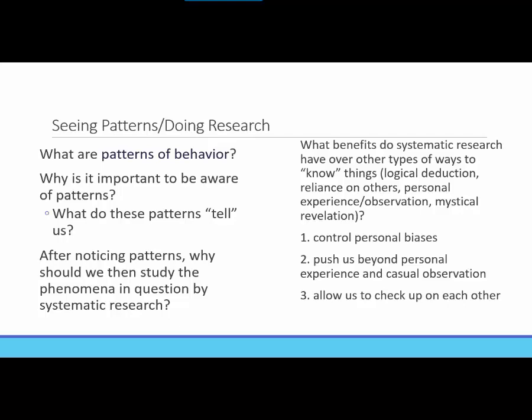But this idea that we know something based on our observations and personal experience does not necessarily meet the gold-star standard of engaging in systematic research. Research methodology is really what sets sociology up as a specific social science and discipline — not just the armchair philosophizing and theorizing that Comte suggested the everyday person on the street engages in. The systematic research standard has advantages over other ways of knowing, whether through logical deduction, reliance on others, or personal experience and observation.